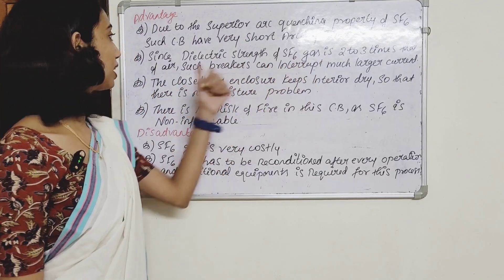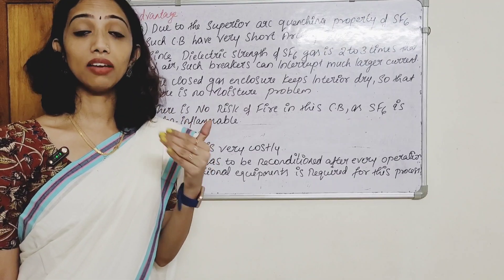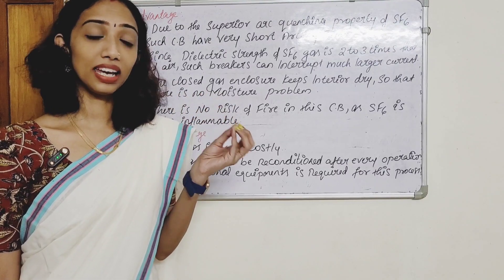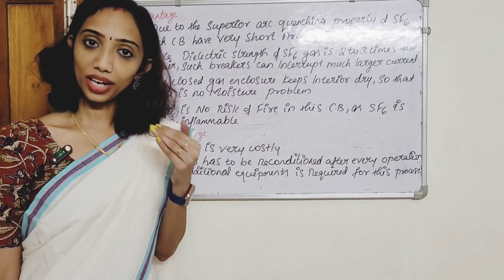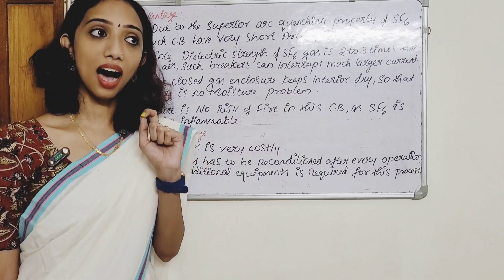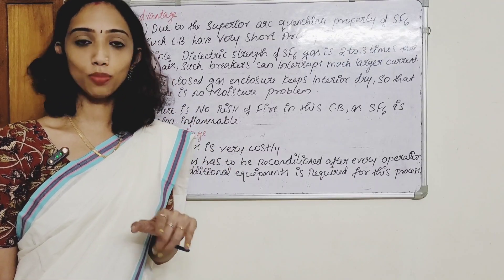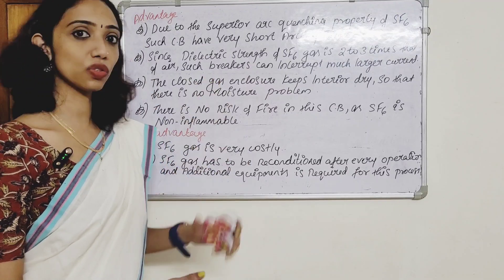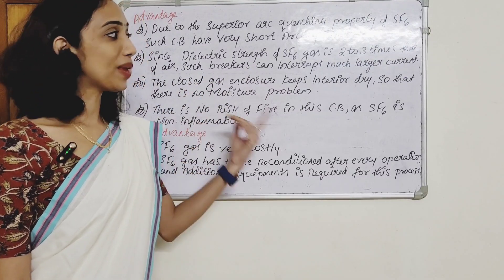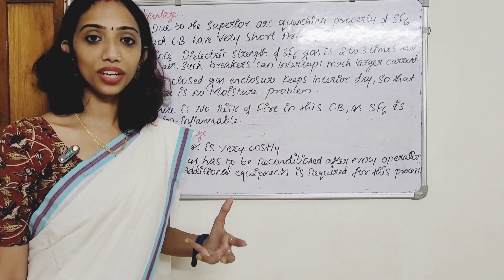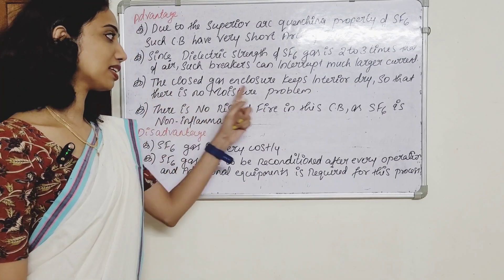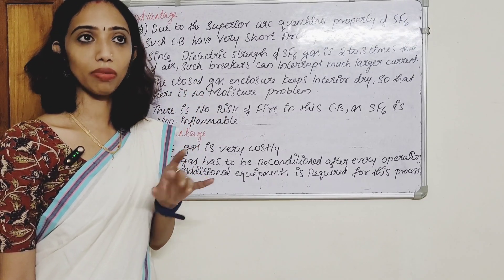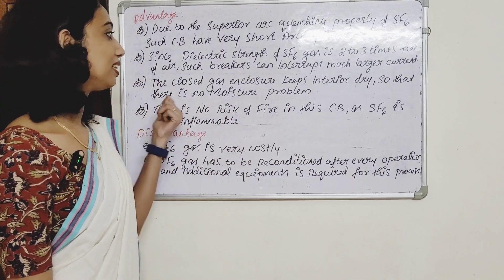Since the dielectric strength of SF6 gas is 2 to 3 times that of air, such breakers can interrupt much larger fault currents. When the moving contact breaks away, the arc forms, but the superior dielectric strength of SF6 means it is quickly extinguished. The closed-gas enclosure keeps the interior dry, so there is no moisture or rusting problem.